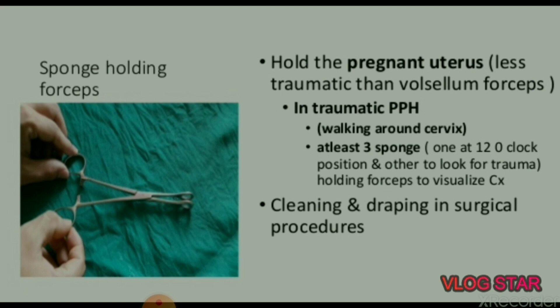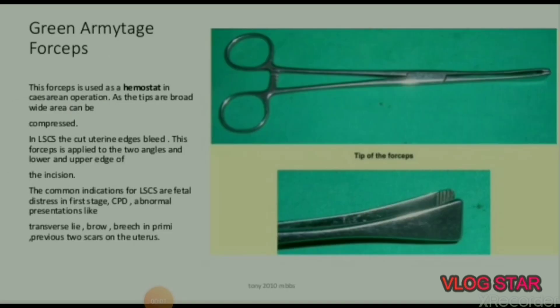Sponge holding forceps: used to hold the pregnant uterus and is less traumatic than Volsellum forceps. In postpartum hemorrhage, used for walking around the cervix — at least three sponges, one at 12 o'clock position and others to look for trauma. Also used for holding and visualizing the cervix, and for cleaning and draping in surgical procedures.